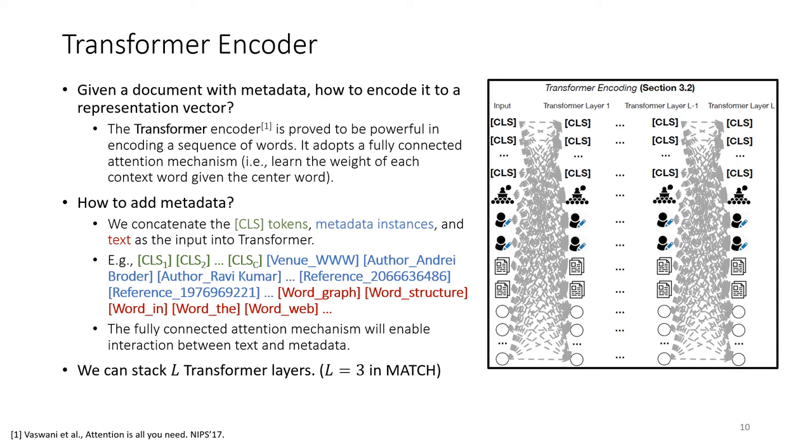And in the input sequence, we first have multiple CLS tokens—I will explain why we need multiple tokens in the next slide—followed by its venue information, authors, references, and words. And the fully connected attention mechanism will enable interaction between text and metadata. For example, in MATCH, we use a three-layer transformer architecture.